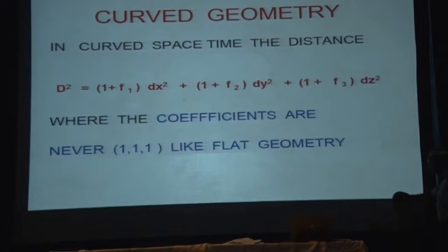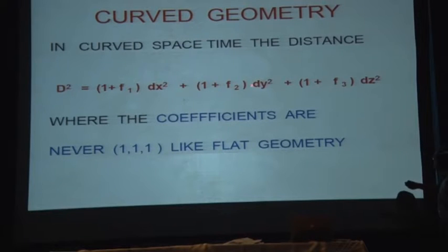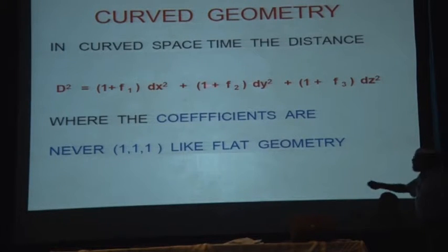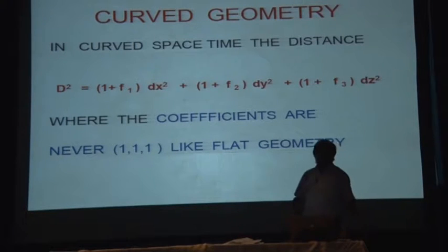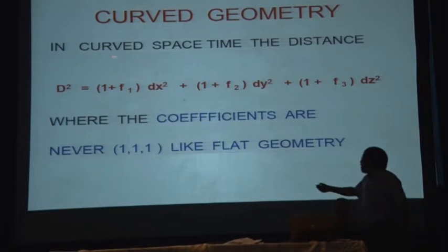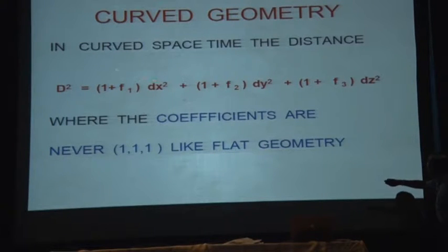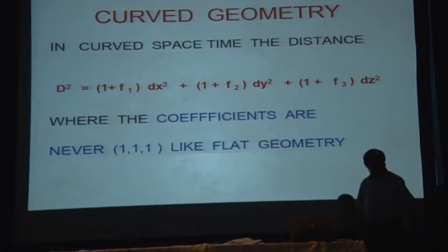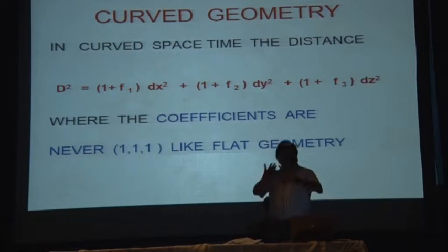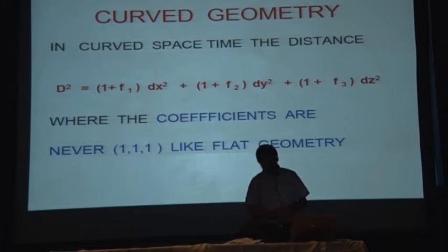Instead of coefficient 1, 1, 1 for dx², dy², dz², it becomes (1 + f₁)dx² + (1 + f₂)dy² + (1 + f₃)dz². This is the new distance squared. Unless f₁, f₂, f₃ are zero — that is, the space is flat — if they are non-zero, the space is curved. This is the mathematical understanding of a curved space.